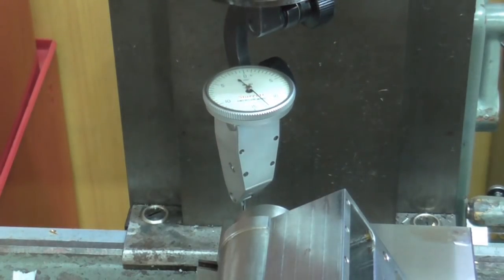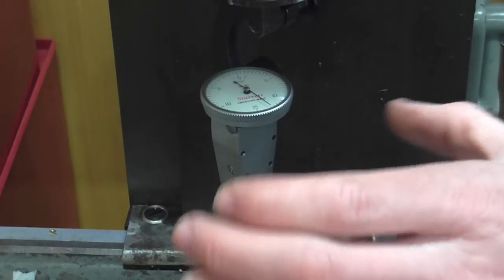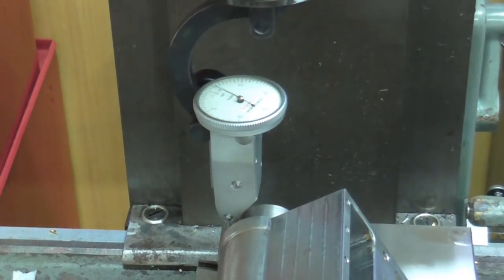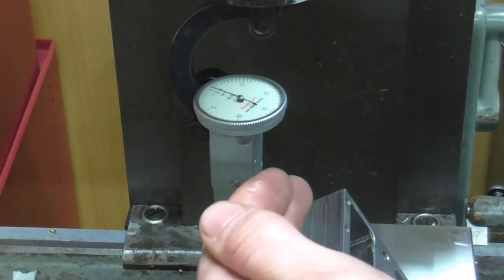I'm turning the clock by the way using the spindle not by actually grabbing hold of anything on the clock and there we are we're on zero so we have now found the centre line in that plane